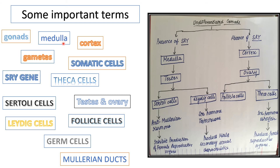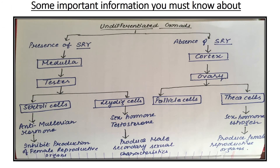In XX embryos (females), the ovary originates from the cortex region, while the medullary region declines. Conversely, in XY embryos (males), the medulla develops into the testis, and the cortex regresses. This completes the overview — now moving to the main conclusion.